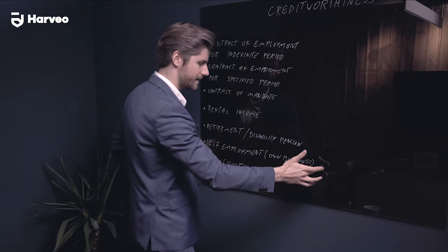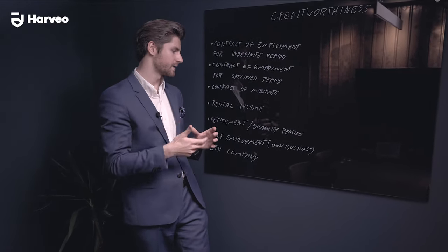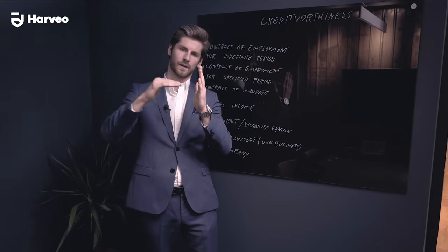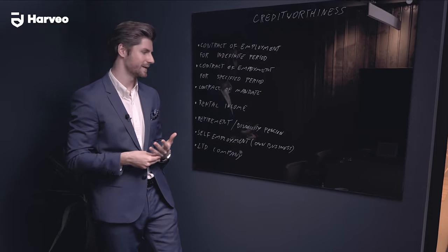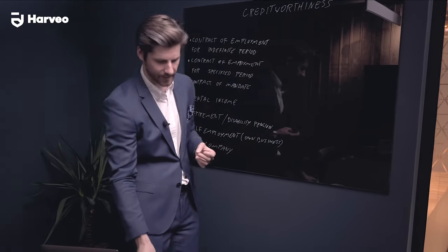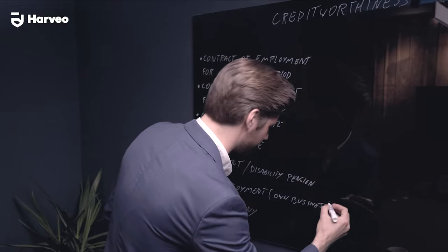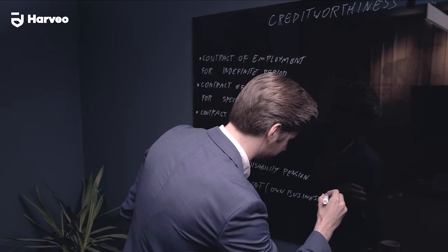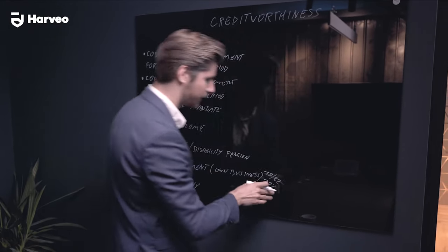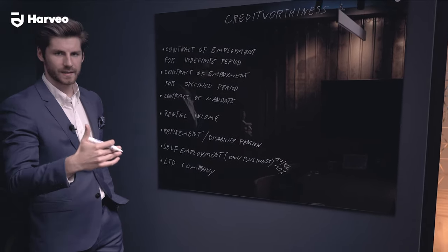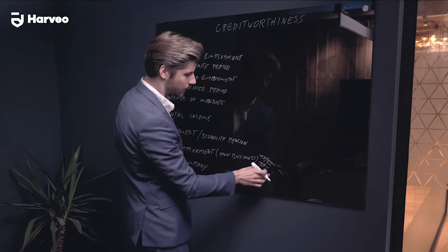From self-employment we calculate income similarly to a contract of employment — we take the average. The foundation is the last closed tax year's PIT declaration, plus a month-by-month KPiR statement — it's hard to translate but it's a document showing revenue minus costs giving gross income. That gross income is then calculated with your tax rate: either 17% or 32% progressive tax, or a flat 19% linear tax.